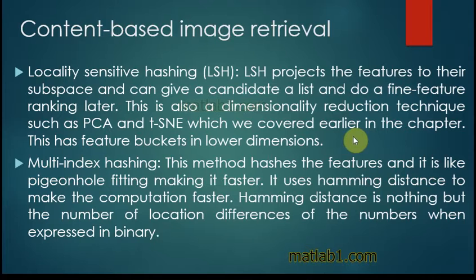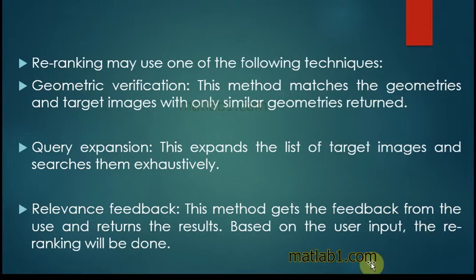Multi-index hashing hashes the features and is like pigeonhole fitting, making it faster. It uses Hamming distance to make the computation faster. Hamming distance is the number of location differences of a number when expressed in binary. These methods are faster, need lesser memory, with the trade-off being accuracy.